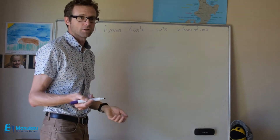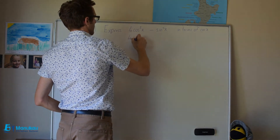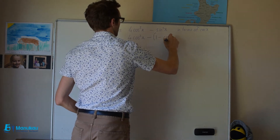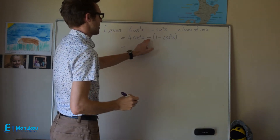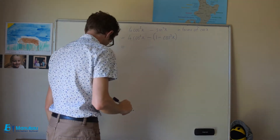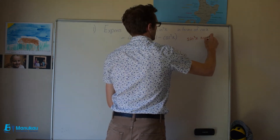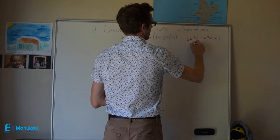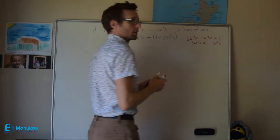We're going to use our trig identity. We want just cosines, so we're going to convert sine squared x. So I'm going to write four cosine squared x minus bracket one minus cosine squared x. I've changed sine squared x using the trig identity sine squared x plus cosine squared x equals one, and I know that sine squared x is therefore equal to one minus cosine squared x. I've just rearranged the formula there.